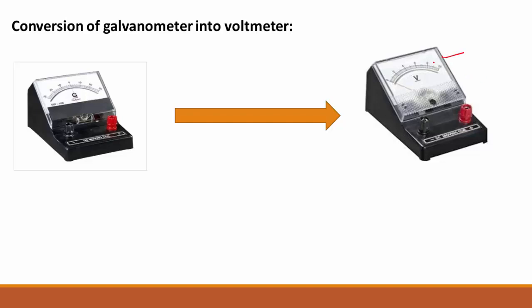The voltmeter is used to measure the potential difference and it is connected in parallel with the component across which the potential difference has to be measured. After including the voltmeter across the component, the potential difference should not change. Therefore it must have high resistance, and its effective resistance must be made extremely high by connecting a high resistance in series with the coil of that galvanometer.